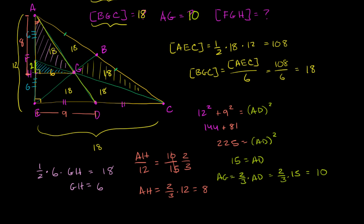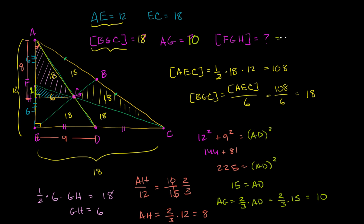Now we have everything to find the area of triangle FGH. It's one-half times the base FH, which is 2, times the height GH, which is 6. That equals 6. So the area of triangle FGH is 6, and we're done. Using these techniques, you could figure out the lengths of pretty much all of these segments and areas.